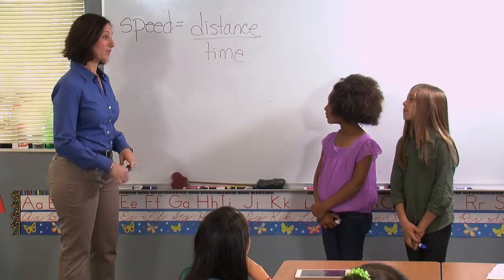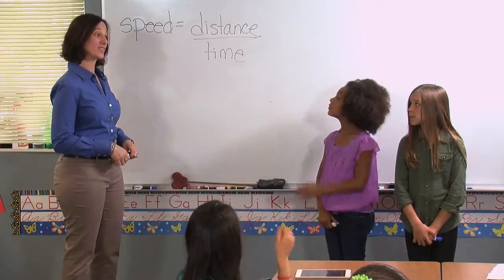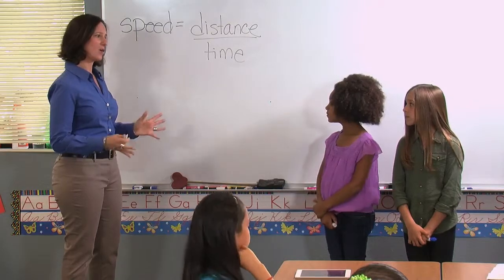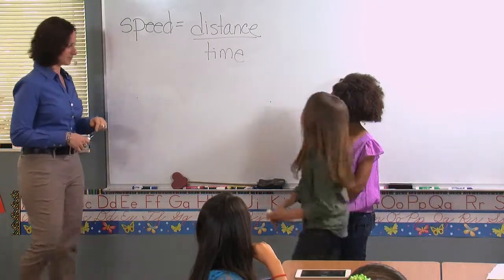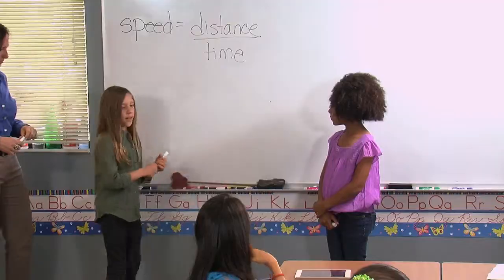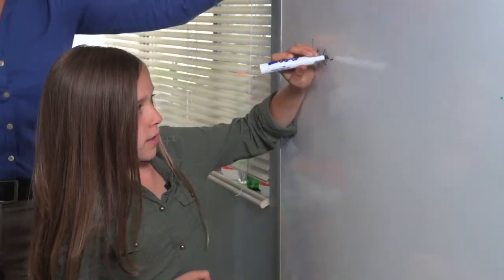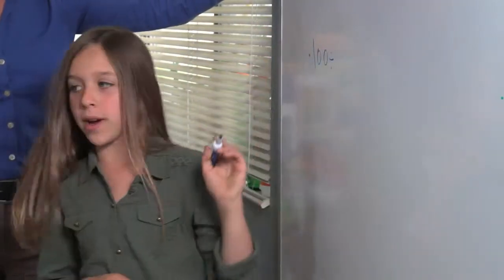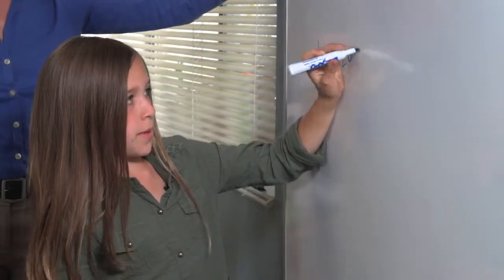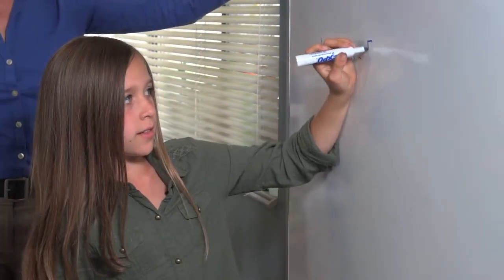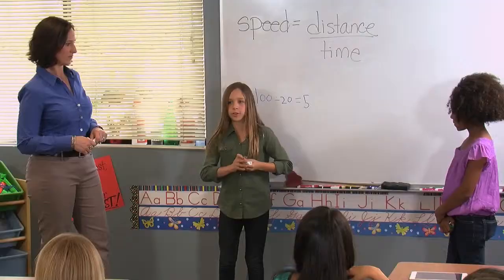Maya, if the first runner ran 100 meters in 20 seconds, how would you figure out her speed? I would divide 100 meters by 20 seconds. That gives me 5 meters per second. That is the first runner's speed.